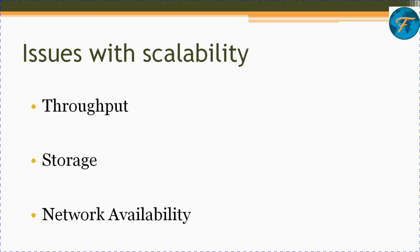Next, there are issues that affect scalability in blockchain. There are three major issues: first is throughput, second is storage, and third is network availability. Throughput is the number of transactions per block per unit time — for example, seven transactions per second or a thousand transactions per minute. The current system like Visa has around two thousand transactions per second. So there is a need for increasing throughput when we want to scale up a blockchain network.